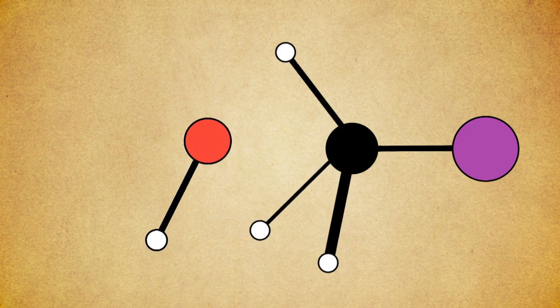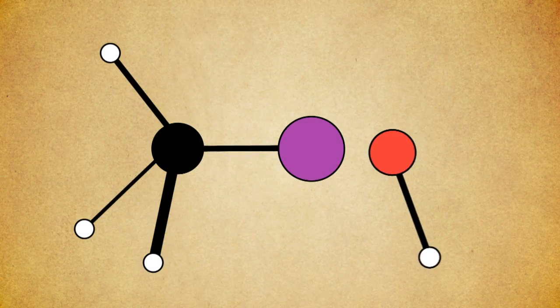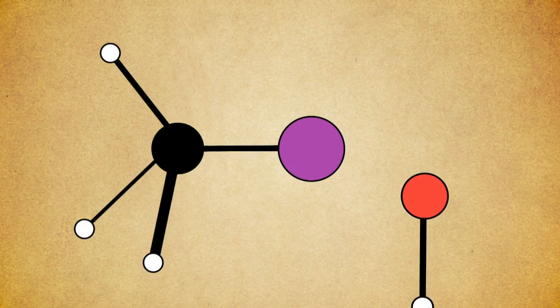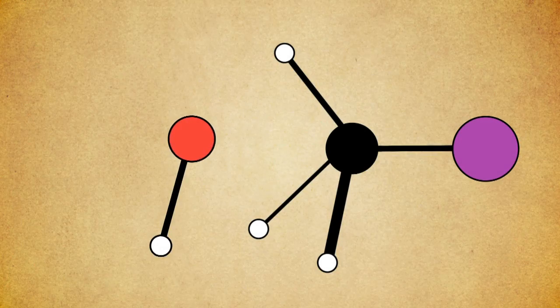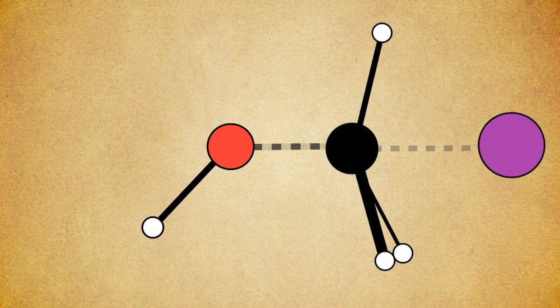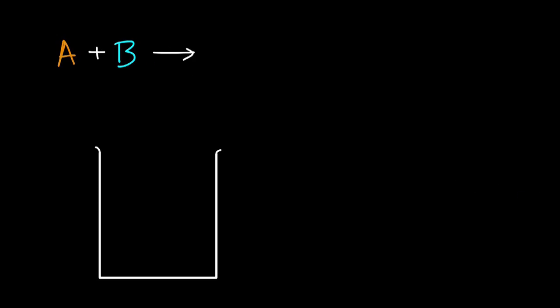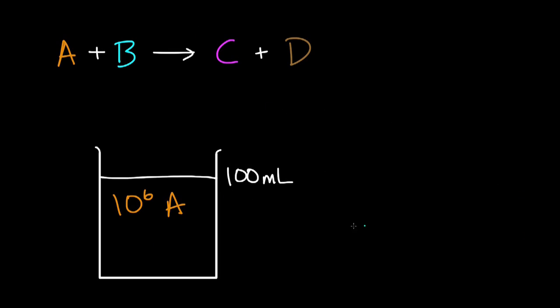Most chemical reactions are the result of two or more molecules colliding with each other. But not every collision leads to a reaction — the molecules must collide in the proper physical orientation, and they must do so with enough energy to break their bonds. Imagine a beaker with 100 milliliters of water in which you dissolve 10 to the 6 molecules of reactant A and 10 to the 6 molecules of reactant B. How likely is the reaction to form C and D? Do a back-of-the-envelope calculation to support your answer. Pause the video.